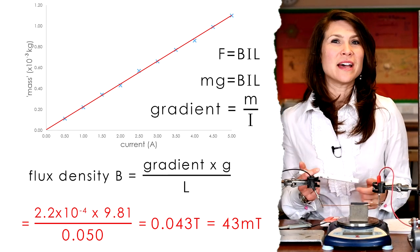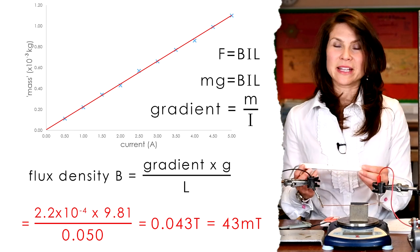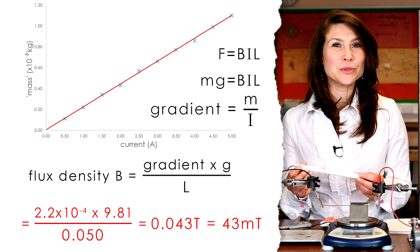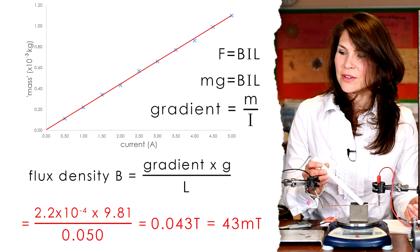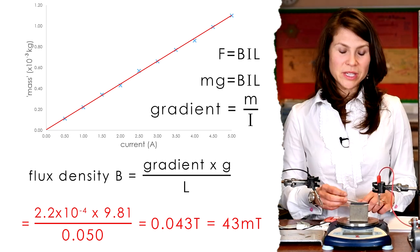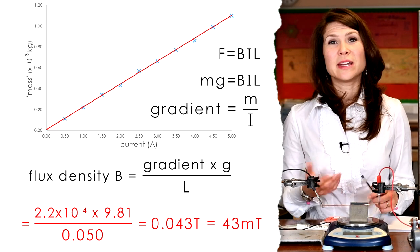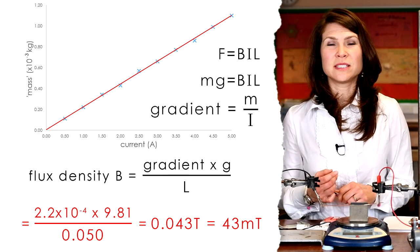We can now compare our value with a value taken with a magnetic probe, also known as a Hall probe. We can see that it gives us a reading of 50 milliteslas. We can use this value then and compare it against our value to find a percentage error in our value.